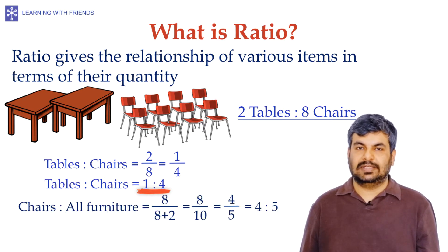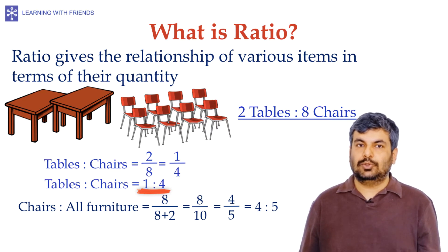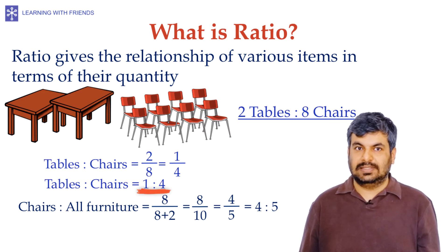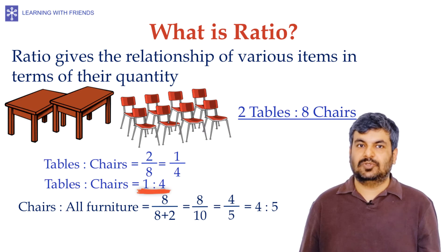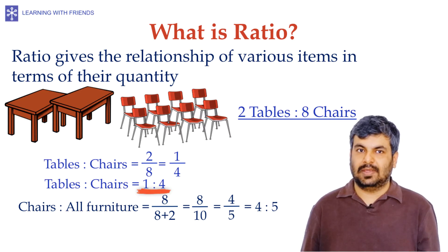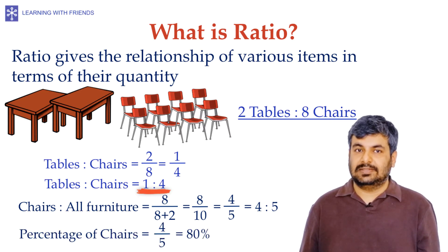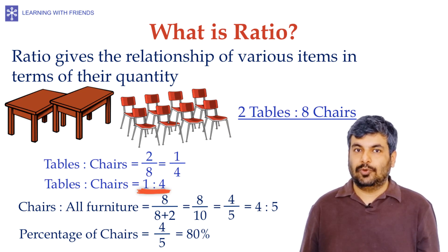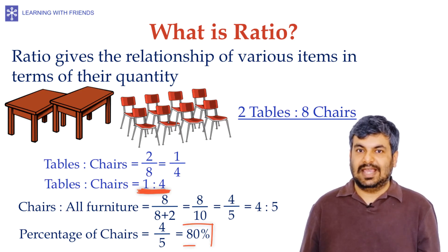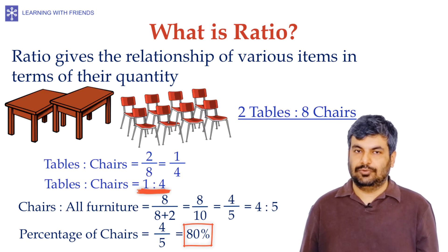If we speak of the ratio of the number of chairs to the total number of furniture items in the room, the ratio would be 8 divided by (8 + 2), which is 8/10 or 4/5, i.e., 4:5. A ratio can also be expressed as a percentage — chairs constitute 4/5, which is 80%, of the furniture items.